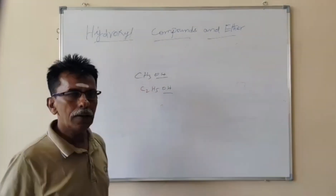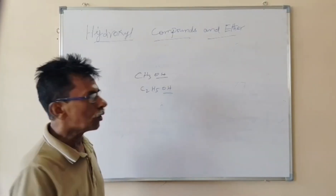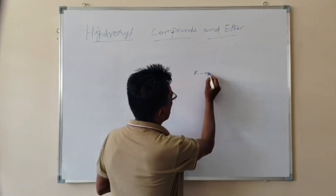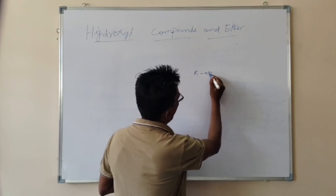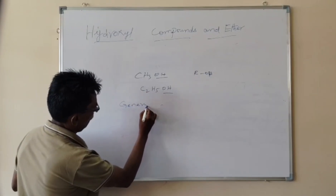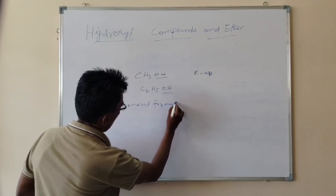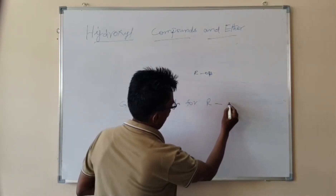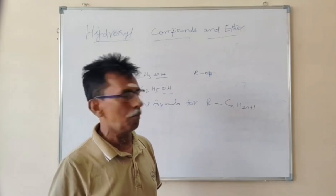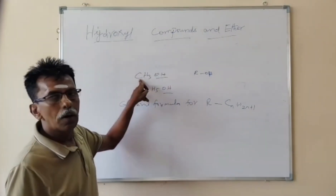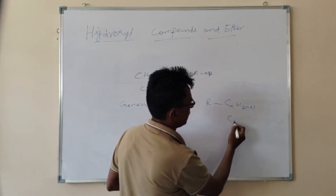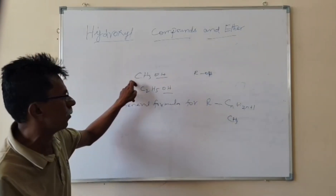Alkyl means generally in organic compound, the alkyl group can be denoted by R. This compound can be denoted by R. The general formula for R is CnH2n+1, where N means the number of carbon atoms. In this compound, the number of carbon atoms is 1, so H is 2 into 1 plus 1, which equals 3.